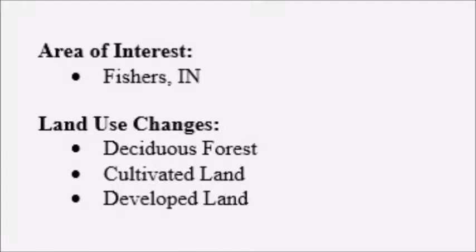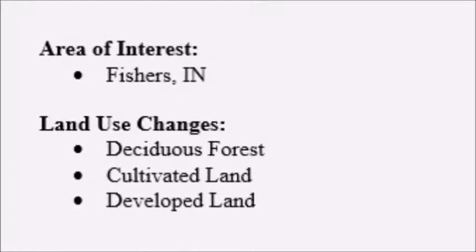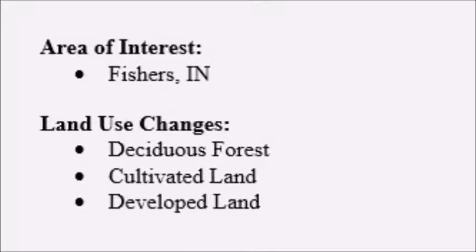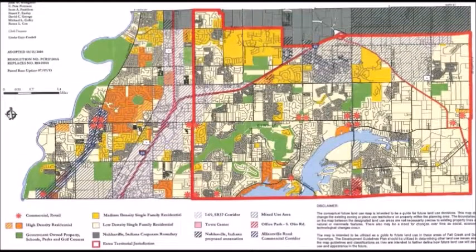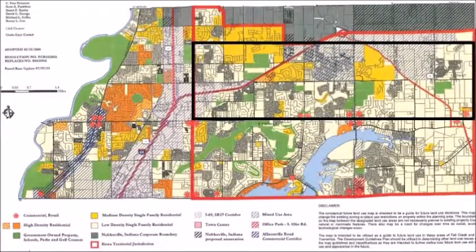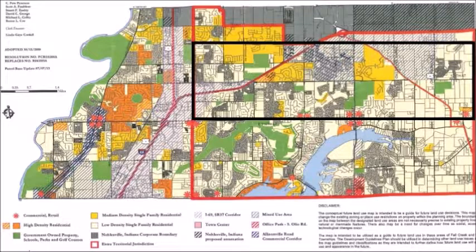This area changed from a deciduous forest to cultivated land to its current developed state. This is a map of the current land use in Fishers, Indiana. We will focus on the area within the black box.